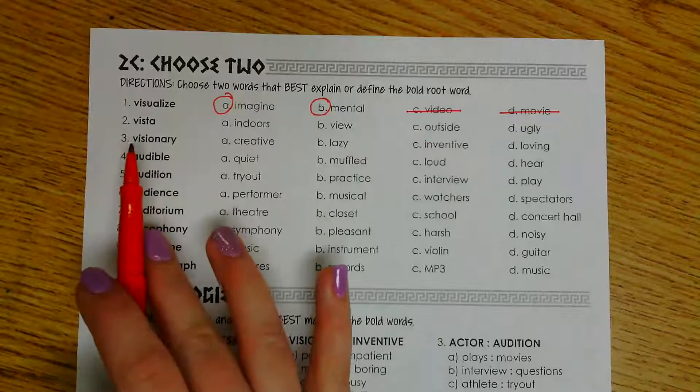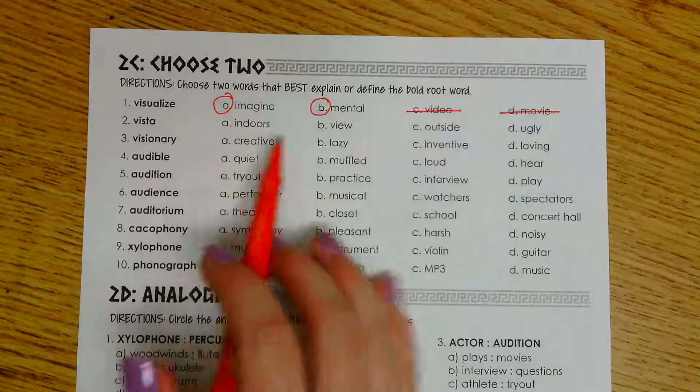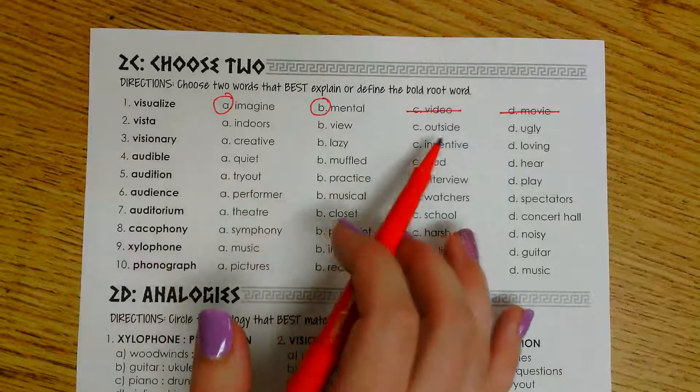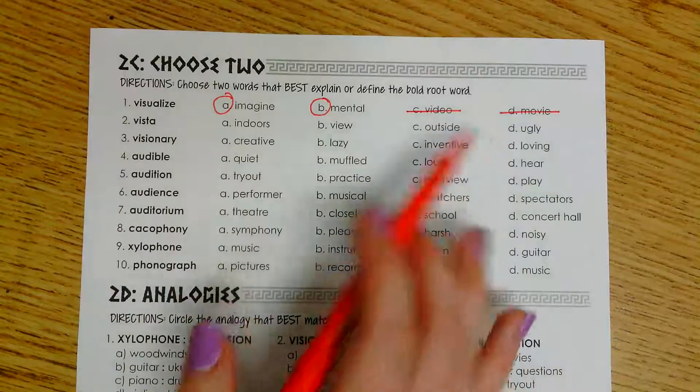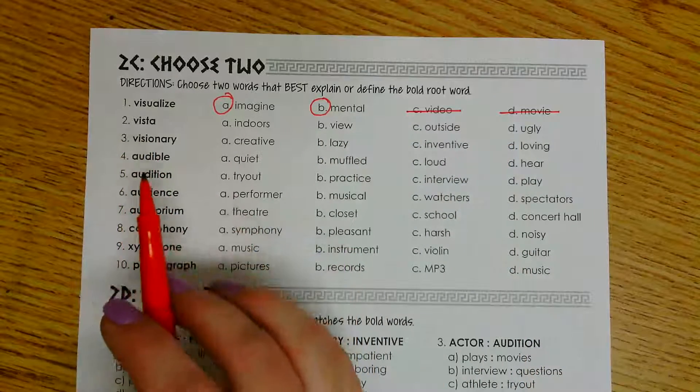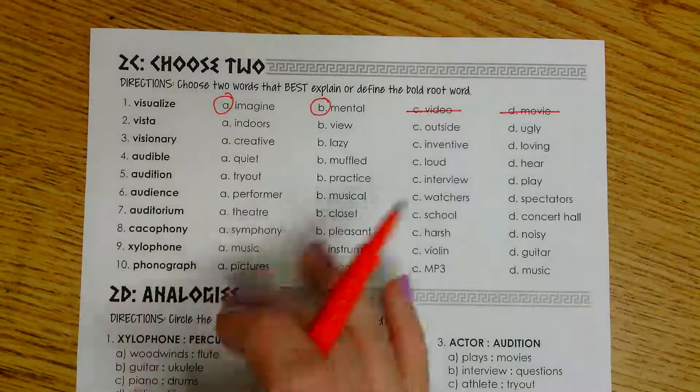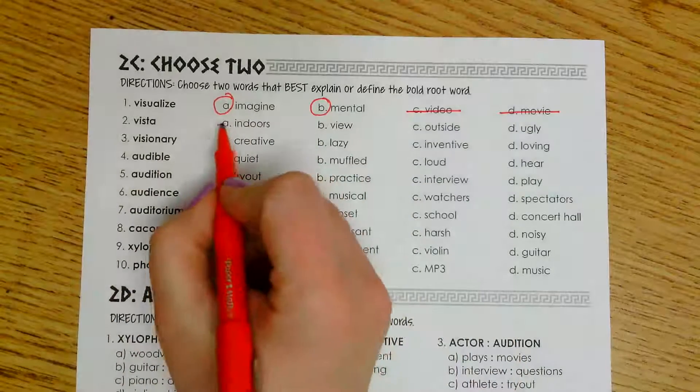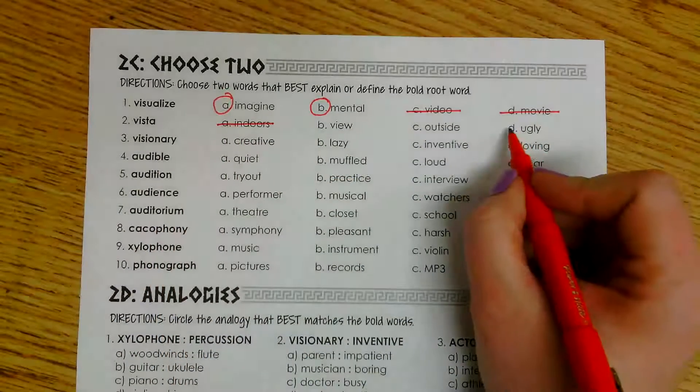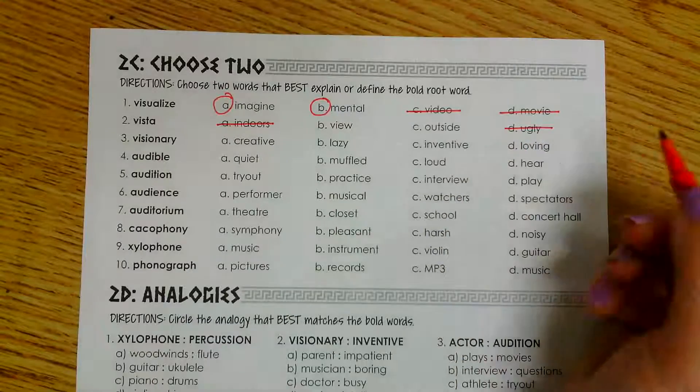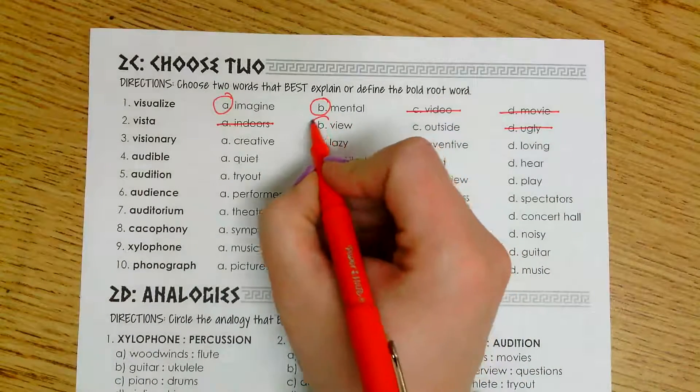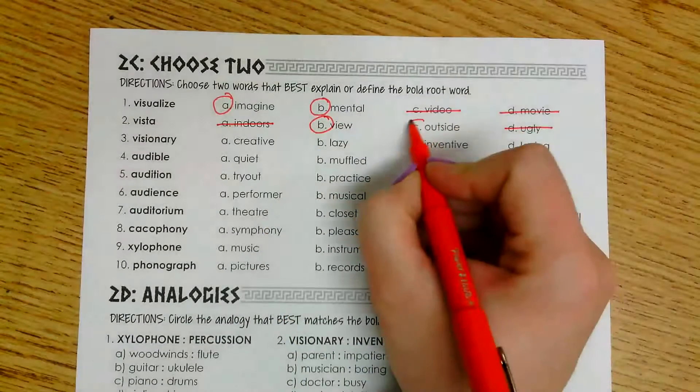Number two is the word vista. We have indoors, view, outside, and ugly. With the vista, we're talking about something we're looking at outside. So indoors is going to be marked out. And chances are you're not going to just stare at something that's ugly. So you're going to pick view and outside.